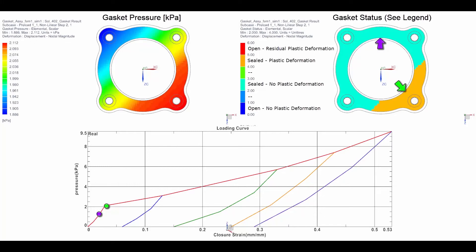In the second subcase, the preload is increased in the bottom right bolt. Therefore, there is more pressure near this bolt and there is plastic deformation in the green area. The gasket status is now sealed with plastic deformation in this area.